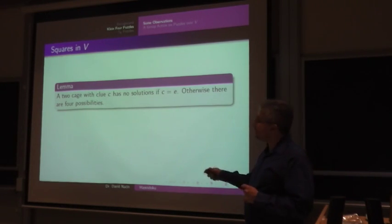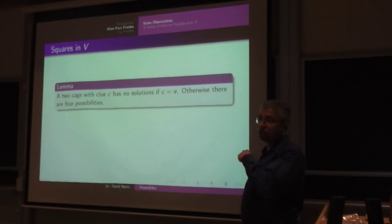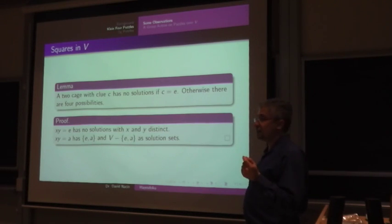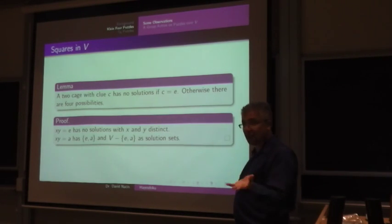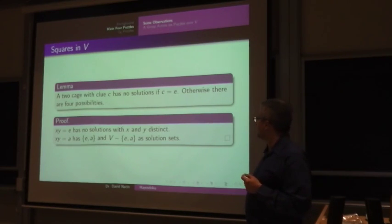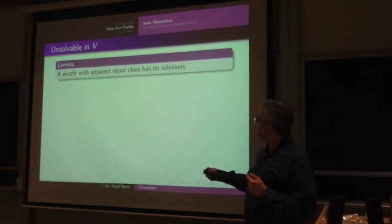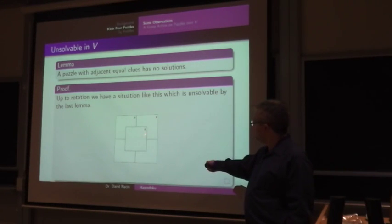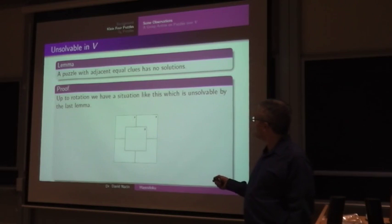So the same, the little element that we proved that counts the number of solutions still holds. It holds over any group. We end up with the order of the group minus the number of roots. Now, it turns out if my clue is the identity, I'm going to have four roots. So I'm going to have four minus zero possibility, four minus four solutions, which is zero. And in the other case, I end up with four solutions each. So no solutions if my clue is the identity and four solutions otherwise. But we immediately get this lemma, which is really strong and definitely not true in Z4, which is adjacent equal clues imply no solutions. For example, if these two are adjacent, we see that if I were to force a line here, this would have to be the identity. And we just said we can't have a two cage with the identity as a clue. So no solutions if we have adjacent equal clues.